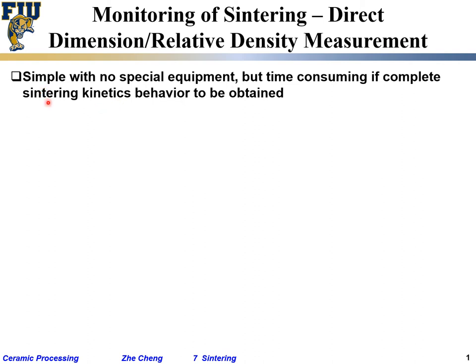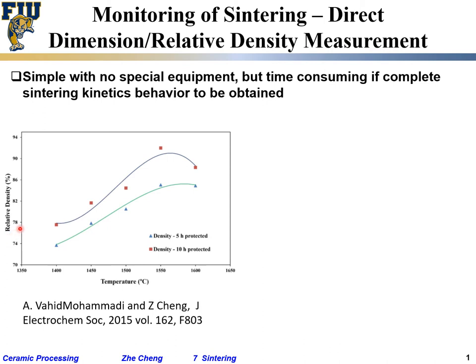From these measurements, you can get a so-called sintering densification behavior — a series of data points. Here I'm plotting relative density versus temperature for different conditions, for example 5-hour, 10-hour sintering times. To get each point, I have to do one single experiment at a specific temperature for a specific time, arriving at a specific density number.